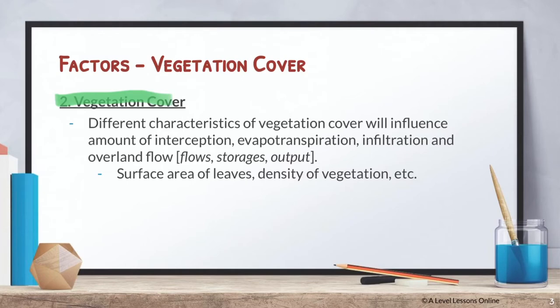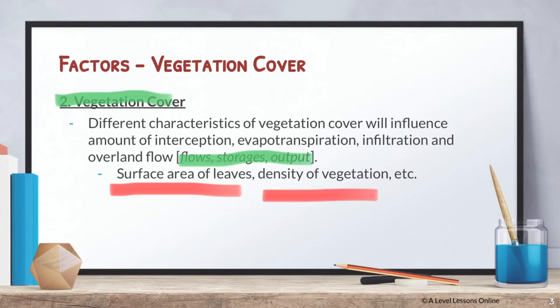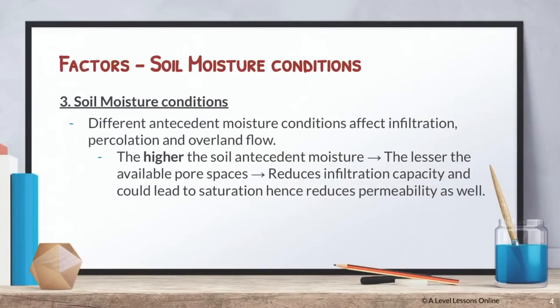The next factor is vegetation cover. Different characteristics of vegetation cover influence the amount of interception — interception loss — as well as evapotranspiration, infiltration, and overland flow. The surface area of leaves and density of vegetation are key: the more vegetation and bigger the leaf area, the more water stored on the canopy, meaning less water hits the ground, resulting in less infiltration, percolation, and soil moisture and groundwater storage.